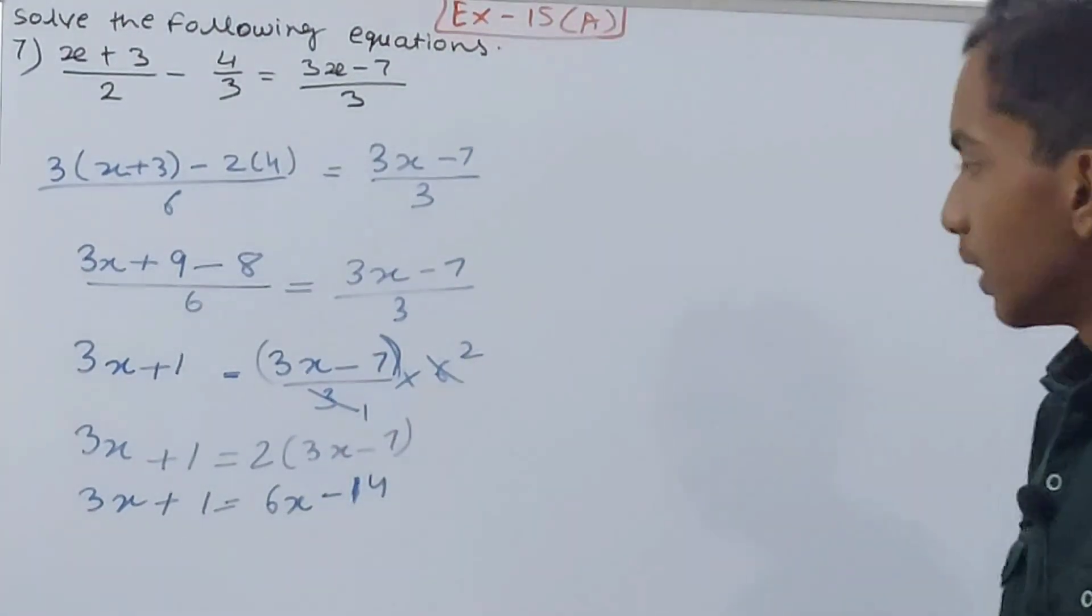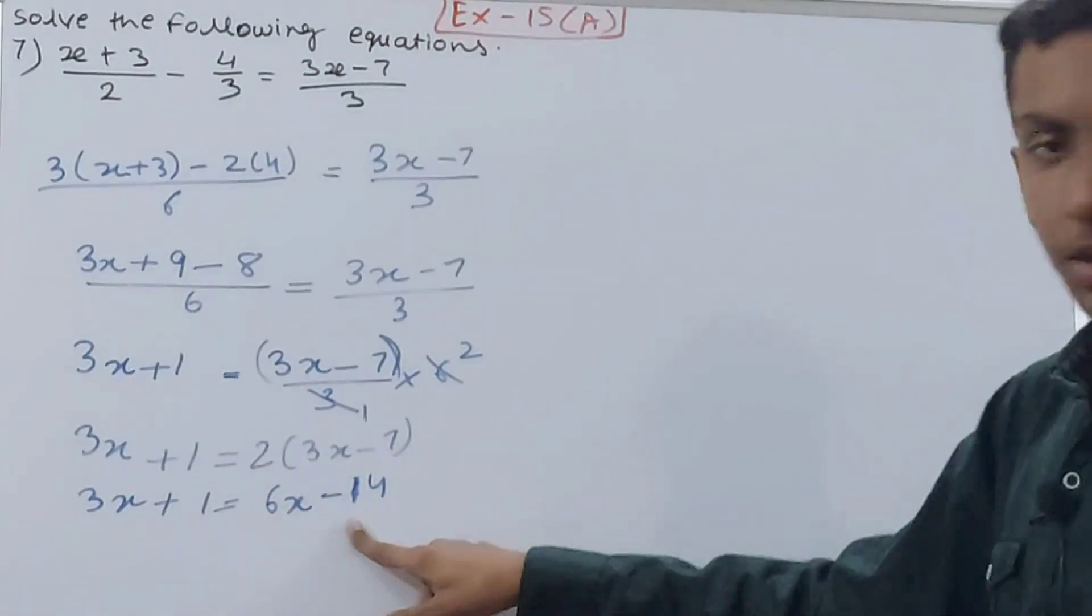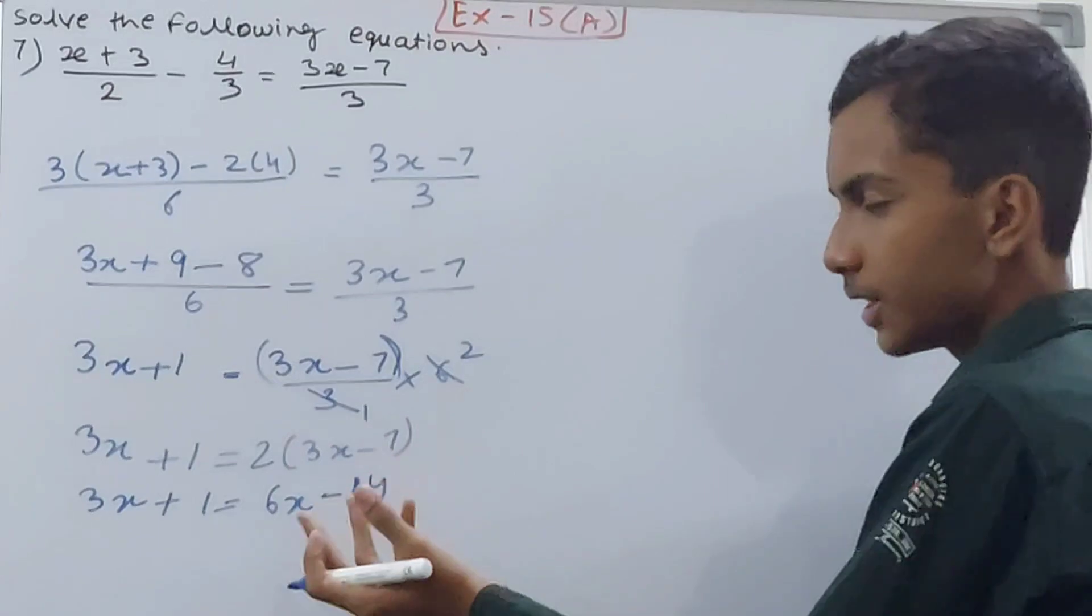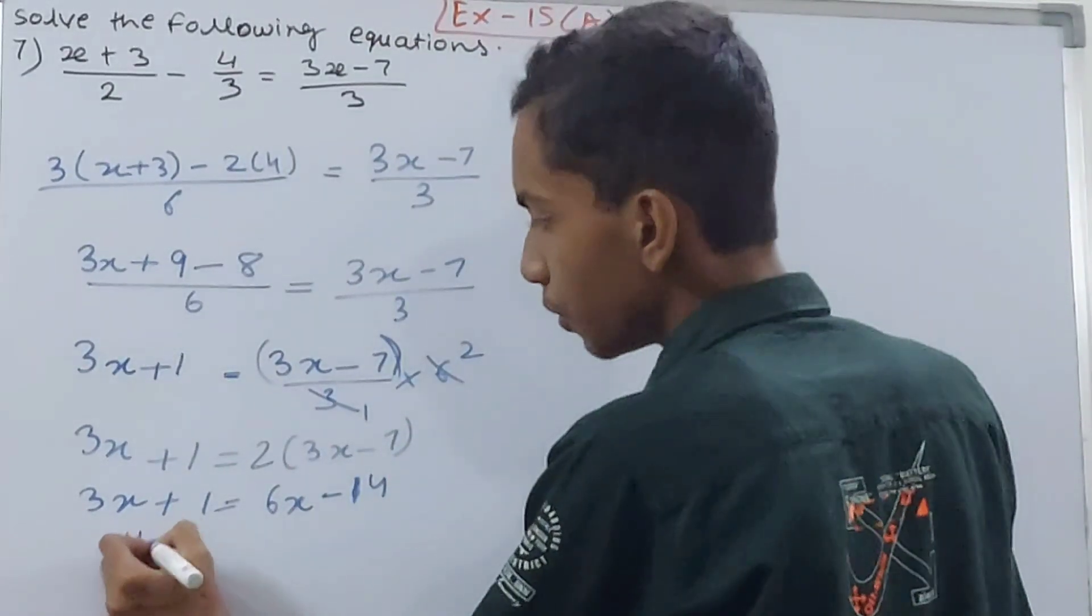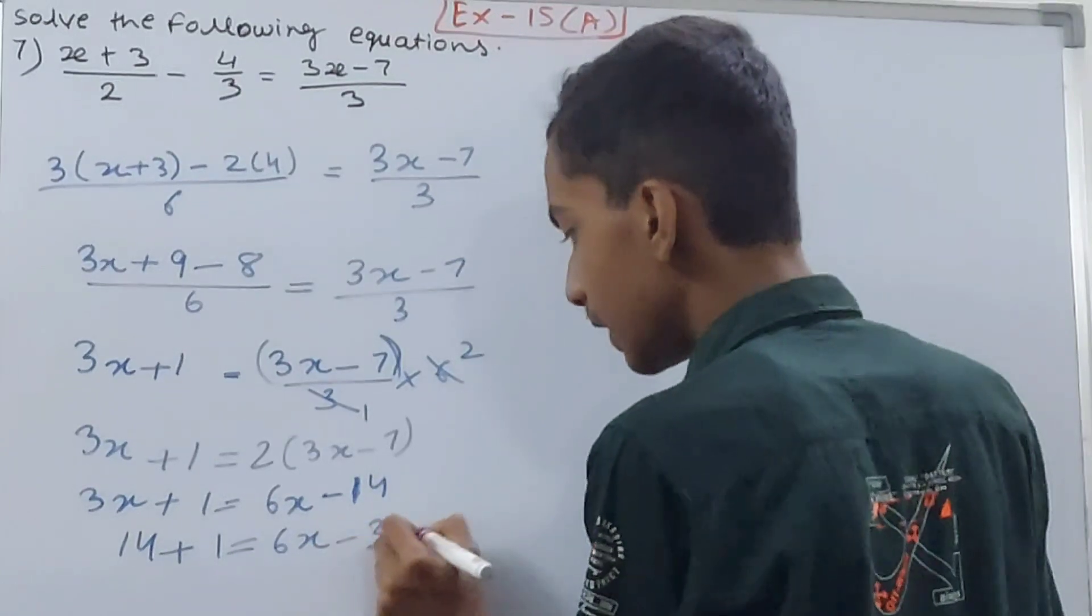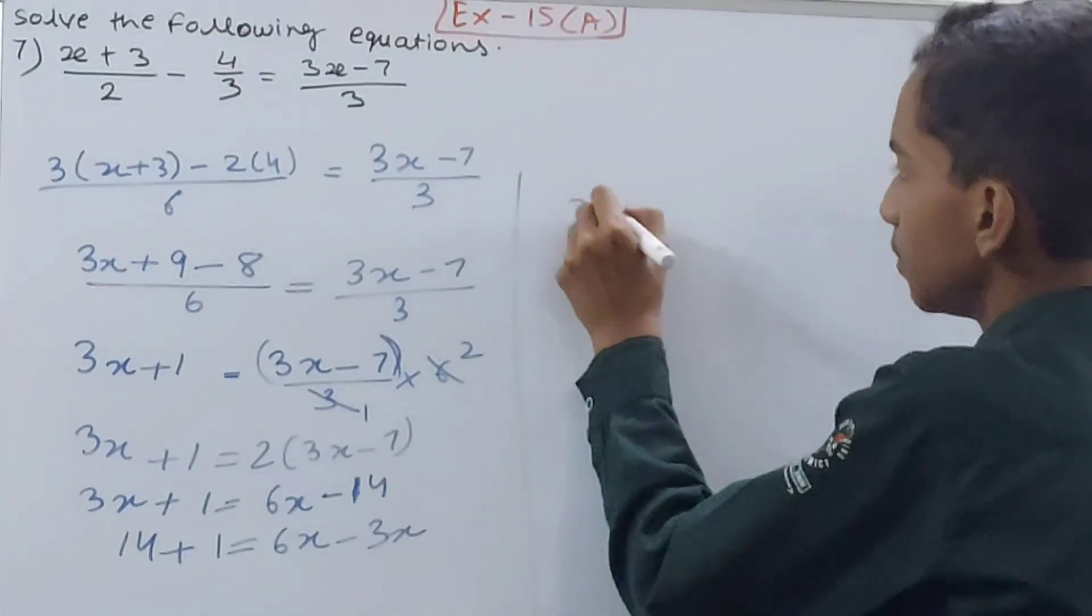From here on it's very simple. We have 14 plus 1 equals 6x minus 3x. So 3x equals 15. Wait, let me bring it to this side only, so 15 = 3x, right?